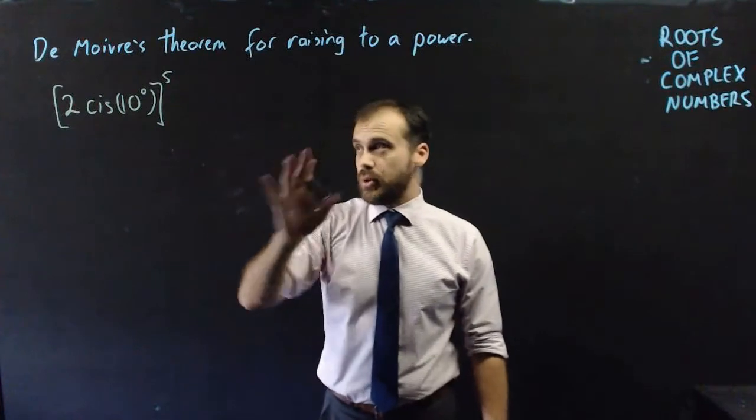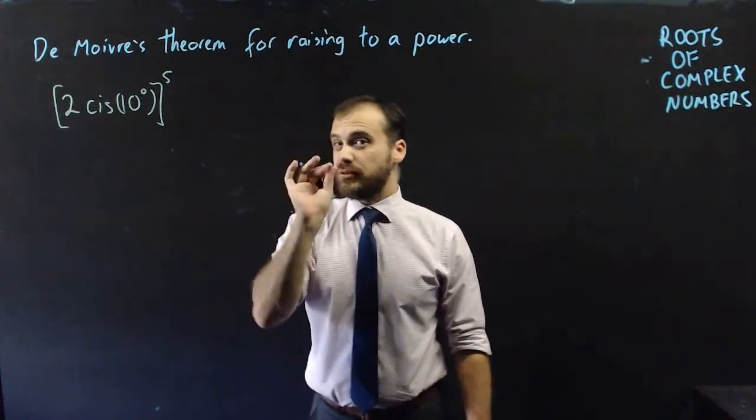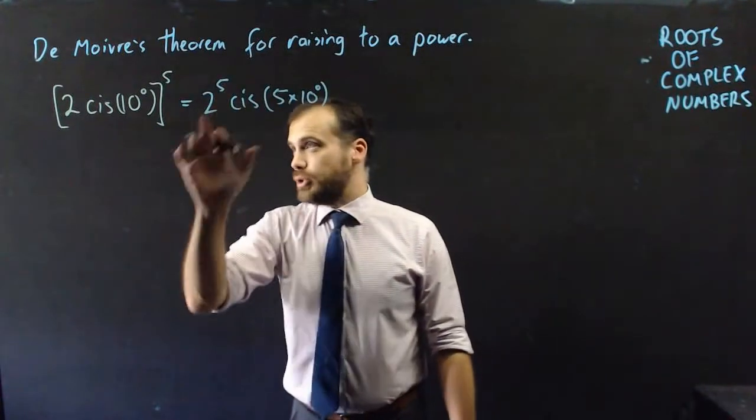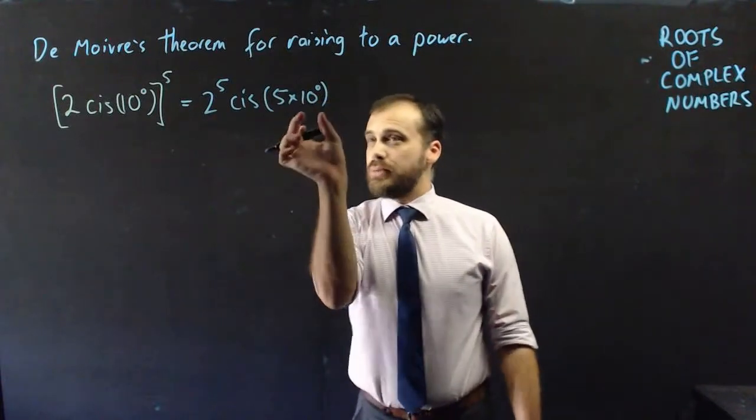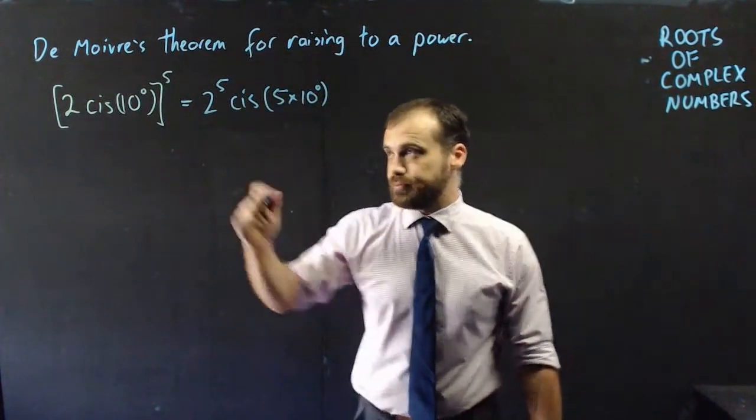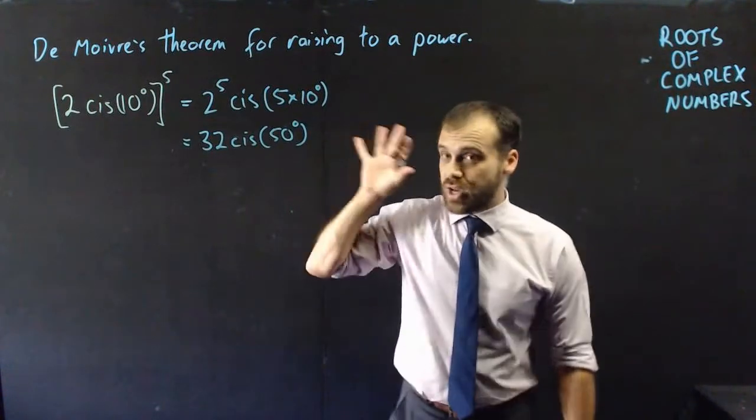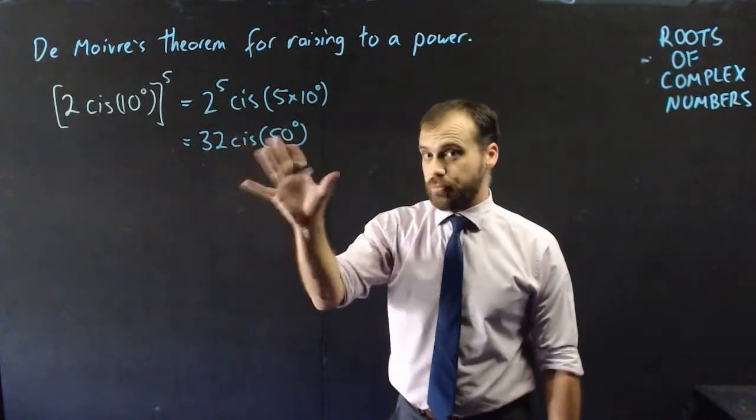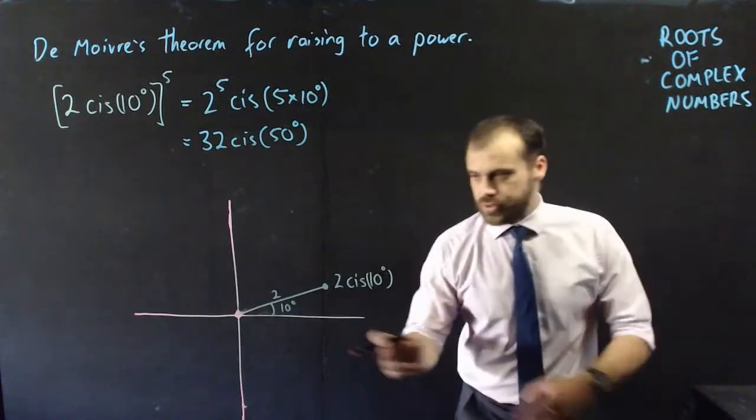Using DeMoivre's theorem, we can raise this to a power in the following way. We raise our modulus to the power of 5, and we multiply our argument by 5, and we'll get this answer. To understand this, you have to understand the geometric interpretation, and it's actually really easy.